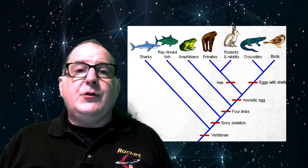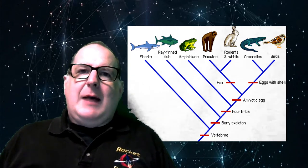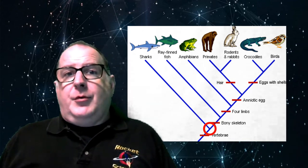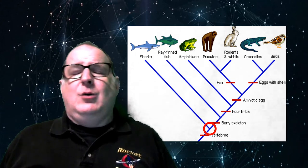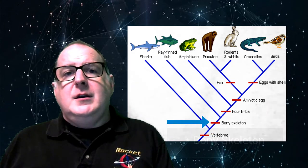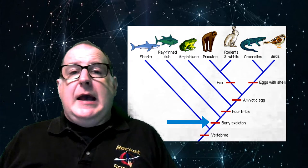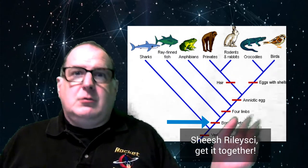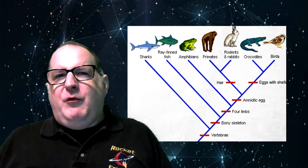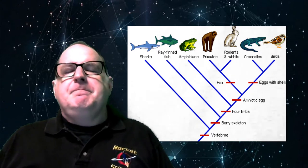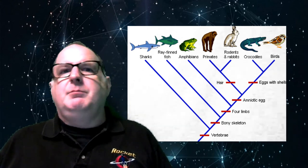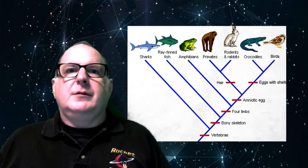Going up from the bottom, the first branching happens with the type of backbone. The shark has a backbone, but it's made out of cartilage. Then, after the bony backbone is developed, you get regular fish - ray-finned fish. Then four legs developed - tetrapods. All the mammals you know are tetrapods, but so are the amphibians like the frog.